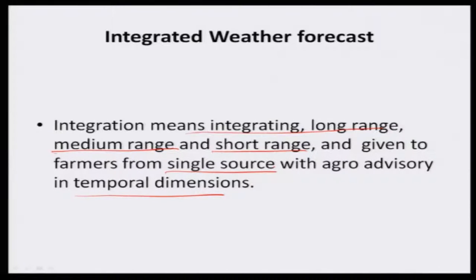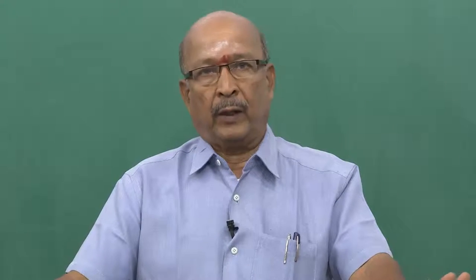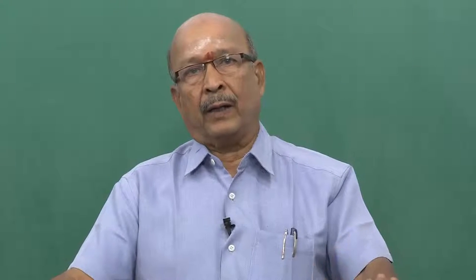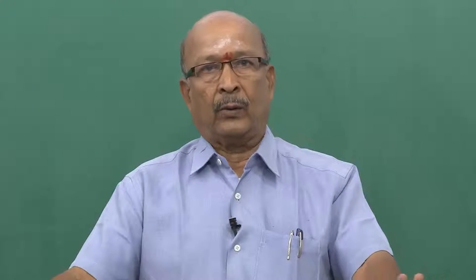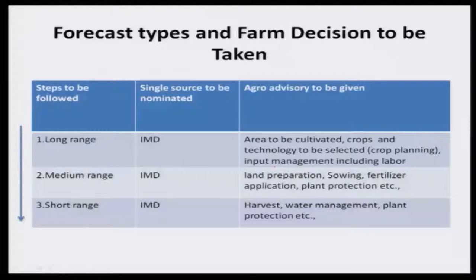First they give long range forecast: what will be the anticipated seasonal rainfall, with a lead time of about 45 days. Then farmers think, 'this is the rainfall we are going to get, so we have to take some decisions.' Then after the season has come, IMD will give medium range weather forecast — what will happen in the coming three to seven days — and farmers can modify certain farm operations. And with short range forecast within one to two days, farmers retune or refine their decisions, taking appropriate farm decisions to reduce the crop production risk.